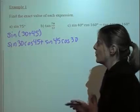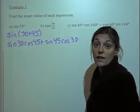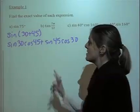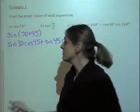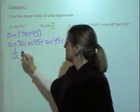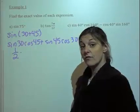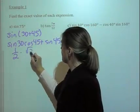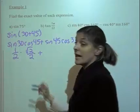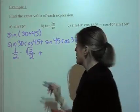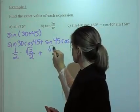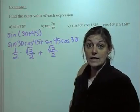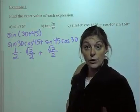Now we're just going to find those values on our unit circle, or if we already know them. We know sine of 30 is 1/2, cosine of 45 is √2/2, sine of 45 is √2/2, and cosine of 30 is √3/2.